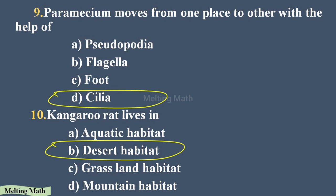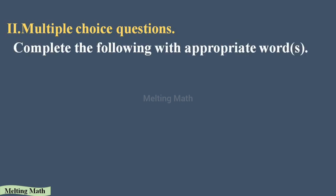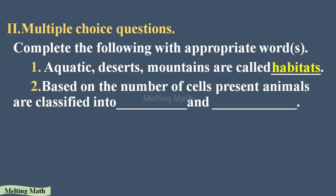Now the second section: fill in the blanks with appropriate words. Question one: aquatic, desert, and mountains are called habitats. Question two: based on the number of cells present, animals are classified into unicellular organisms and multicellular organisms.